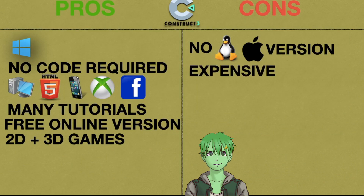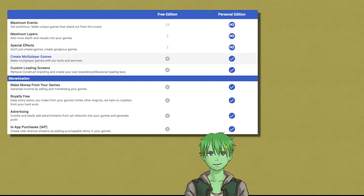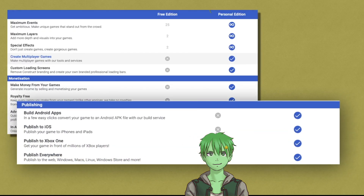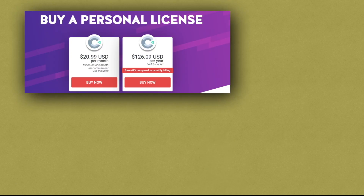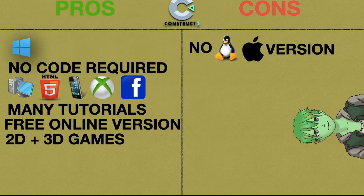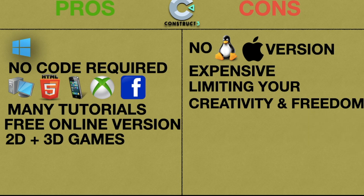However, Construct 3 is quite expensive even for personal usage. The free online version is very limited and you cannot even publish your games on it. The personal edition costs around $100 per year. The pre-built game logic also limits you, so you can only create what has already been made by the developers of the engine.